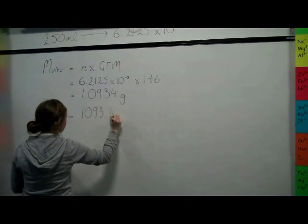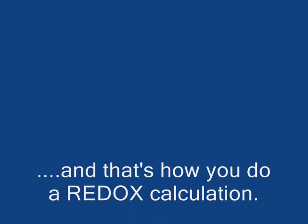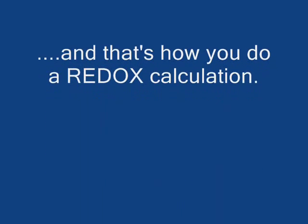This is a mass of vitamin C of 1.105 grams. This is the same as 1093.4mg.